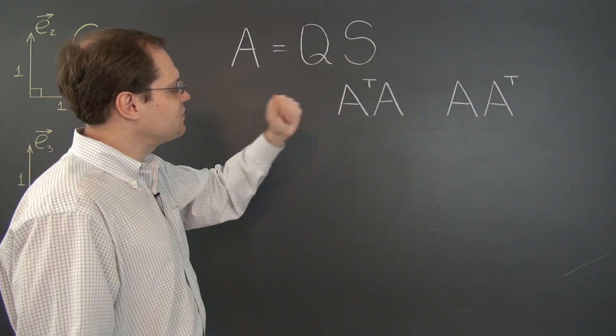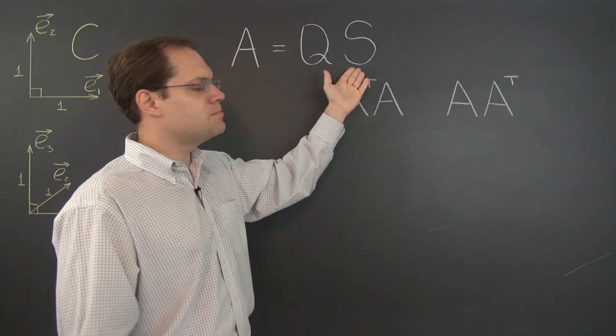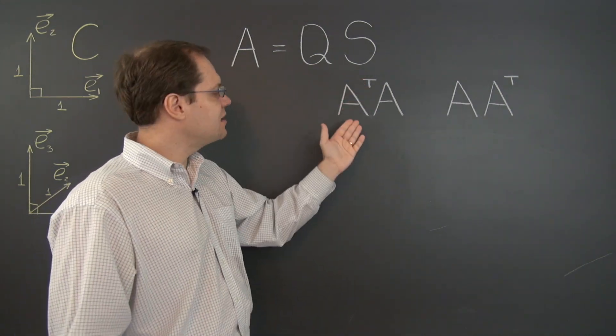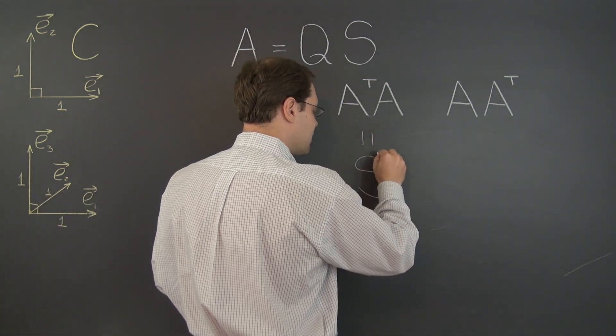And of course if the matrix A is represented as a product of an orthogonal matrix Q and a symmetric matrix S then the product A transpose A simply equals S squared.